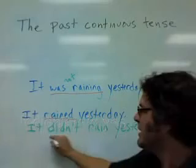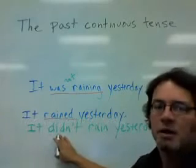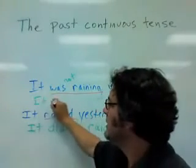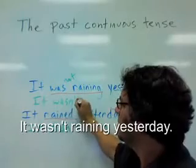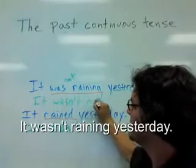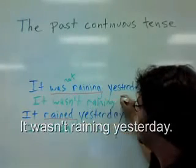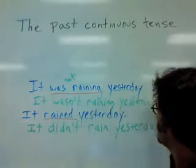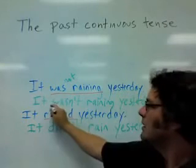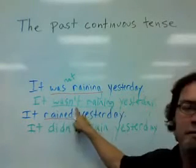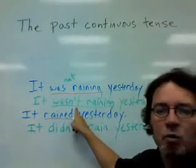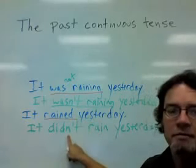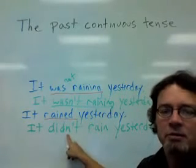Compare the past tense negative, 'It didn't rain yesterday,' to the past continuous negative, 'It wasn't raining yesterday.' Past continuous tense negative: it wasn't raining. Past tense negative: it didn't rain.